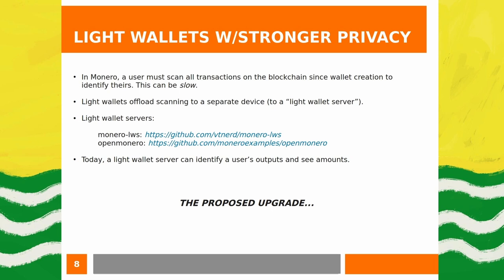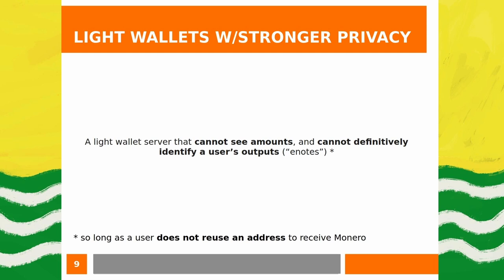The way light wallets work today is they store your view key and use it to identify all received outputs and amounts. The proposed upgrade is a server that can't tell any amounts received or spent, and can't definitively identify which outputs — or e-notes, the Seraphis terminology — belong to a user, so long as the user doesn't reuse an address. This is still a work in progress and more feedback is appreciated.